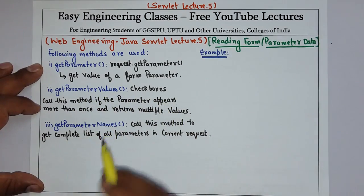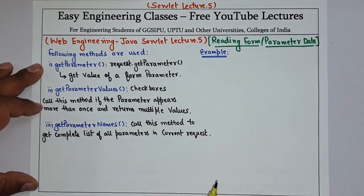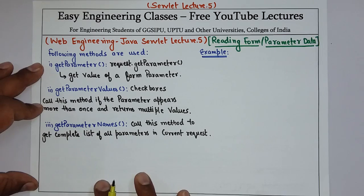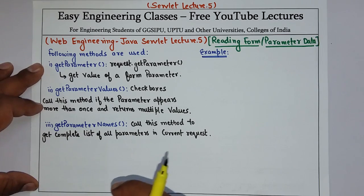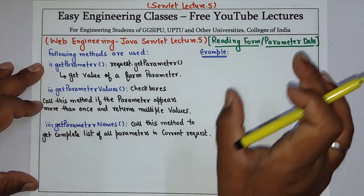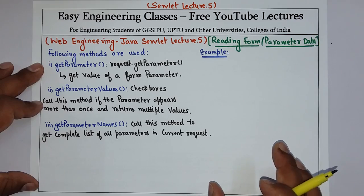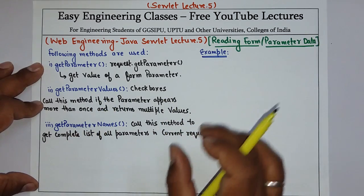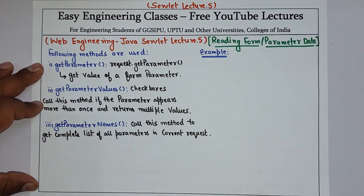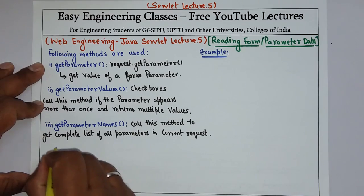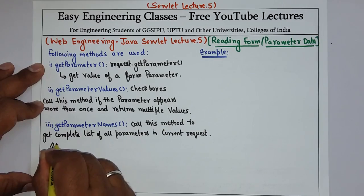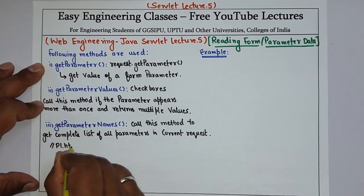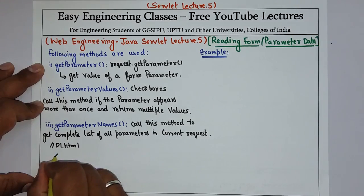Now let's take an example. We will see an HTML form that contains two text fields — first name and last name — and then the Java servlet code where we will use request.getParameter to fetch the values of those text fields. First, create an HTML form; suppose the form name is p1.html.